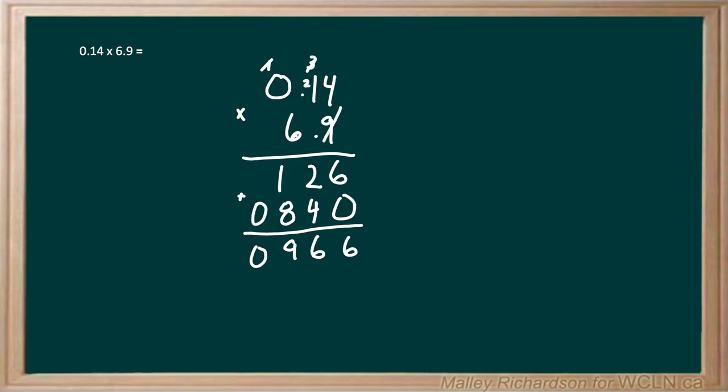Now that we have all our digits in our final answer, we have to worry about our decimal. So we count up how many digits are after the decimal in our multiplication problem. In 0.14 we have 2 digits after the decimal, and in 6.9 we have 1 digit after the decimal. So 2 plus 1 means we're gonna have 3 digits after our decimal in our final answer.